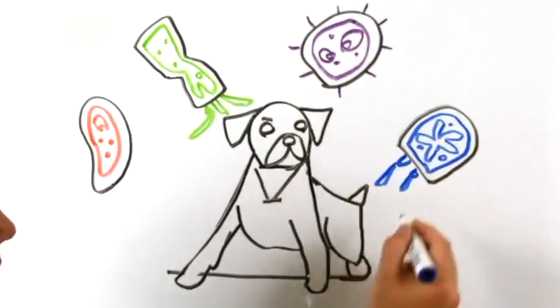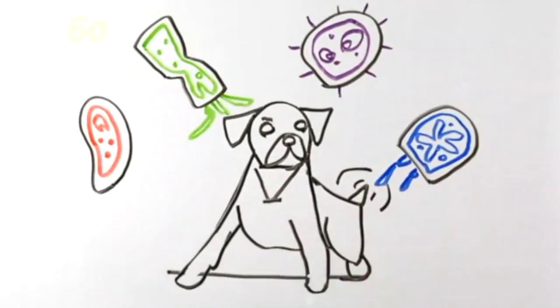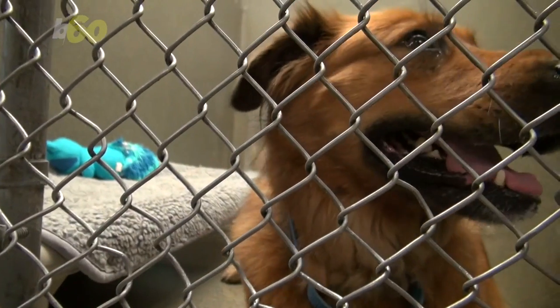These microbes play important roles in the gut, like breaking down food and making vitamins, fighting off diseases and reducing inflammation. If the balance is off, you'll have a sick dog.